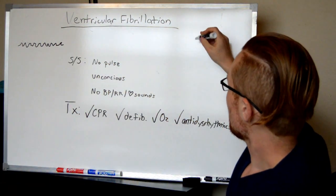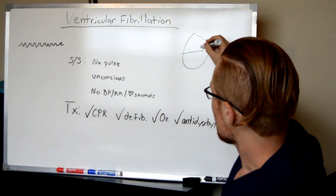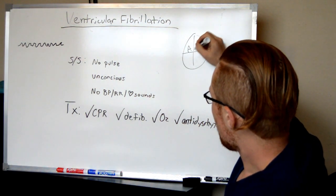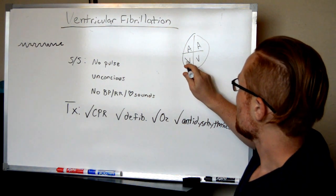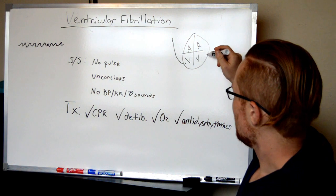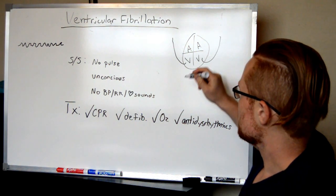Now, ventricles are the bottom two chambers of the heart. So the top two are the atrium, the bottom two are the ventricles. It's the ventricle's job to squeeze the blood out of the heart, the right ventricle squeezes it off to the lungs, and the left ventricle squeezes it to the rest of the body.